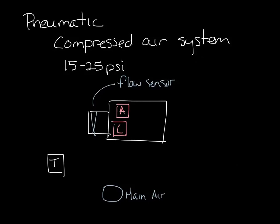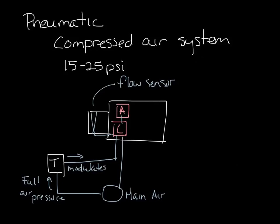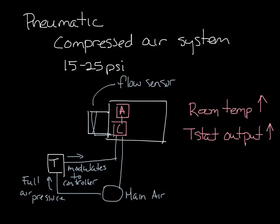So the main air system is connected to the thermostat and the controller. The controller is also connected to the flow sensor and the thermostat, and it's connected to the actuator. The thermostat receives full air pressure from the main supply air. And it modulates the output pressure that goes to the controller to tell the controller whether it needs to open or close the damper. So when the room sensor senses an increase in temperature, the thermostat output pressure increases as well to the controller, which tells the controller to open the damper and supply more air to the space.